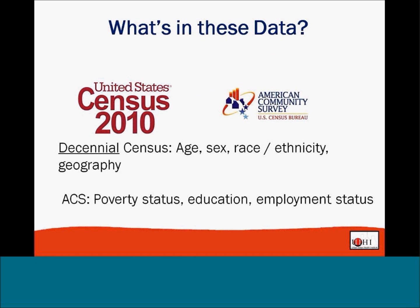To contextualize the talks ahead, I wanted to cover what census data is and why these data are important. When we talk about census data in this context, we're actually talking about two data sources. The first is what you probably think of as census data — the decennial, every-10-year census — used to collect basic demographic variables: age, sex, race, ethnicity, and geography.